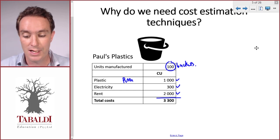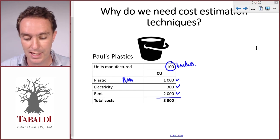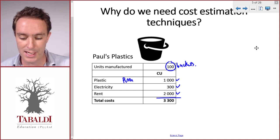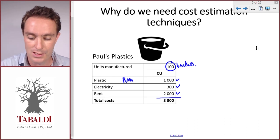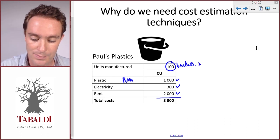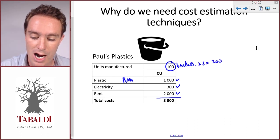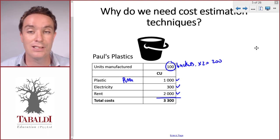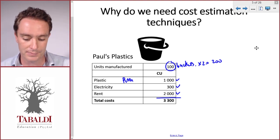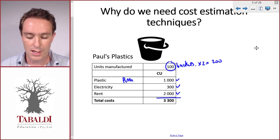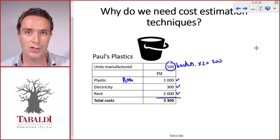Paul is expecting a big jump in demand and his production is probably going to double to 200 buckets. He wants to know how much that will cost him, so he needs to plan. Let's look at each of these costs and see how easy it is to estimate.